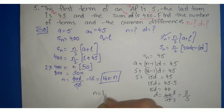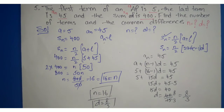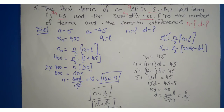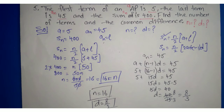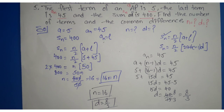अब N की value है 16 and D की value है 8 upon 3 — यह हमारा answer आ गया। यह था हमारा question number 5। I hope यह आपको अच्छे से clear हो गया है। Next session में इसी exercise का next question start करेंगे। इस channel को subscribe कर लीजिए ताकि आपको next video की notification मिलती रहे।